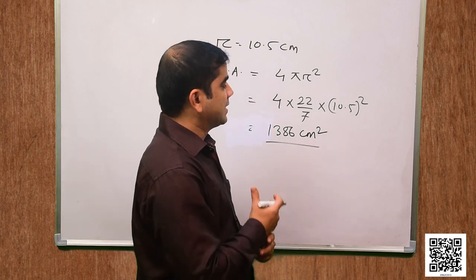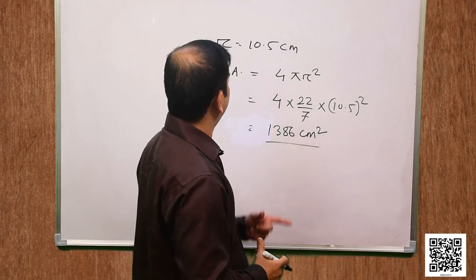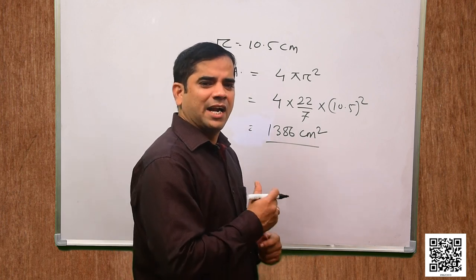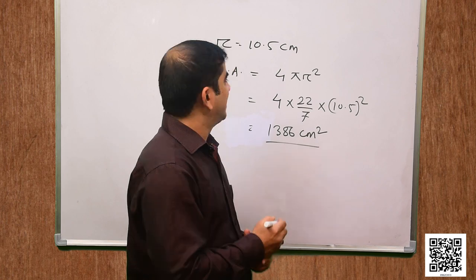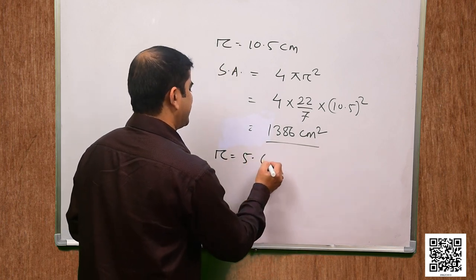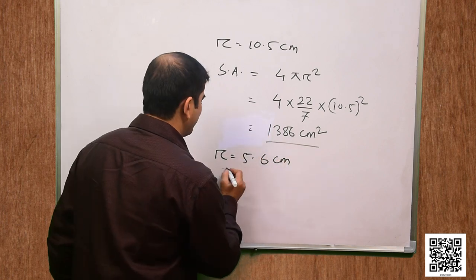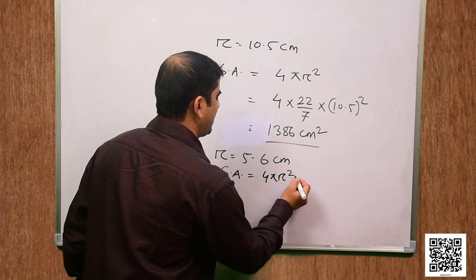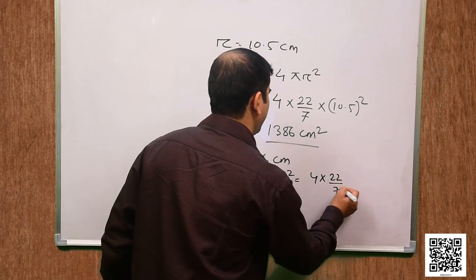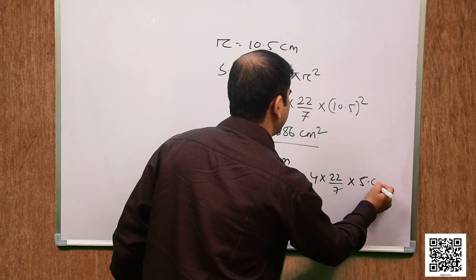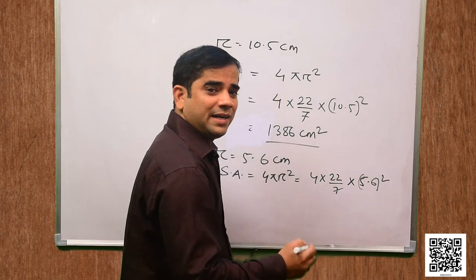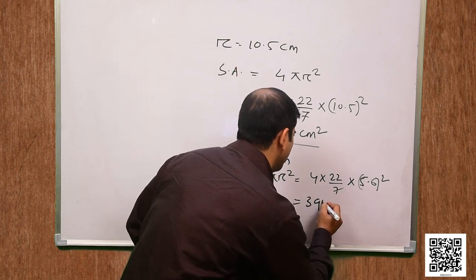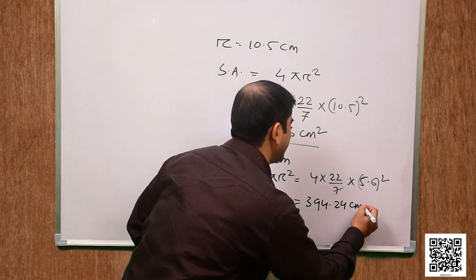This is the surface area for the sphere of radius 10.5 cm. For the second one, r is equal to 5.6 cm. Surface area is 4 pi r squared, that is 4 into 22 by 7 into 5.6 squared, which gives us 394.24 cm squared.